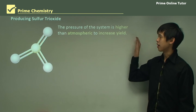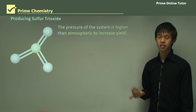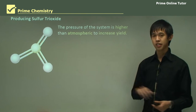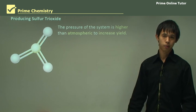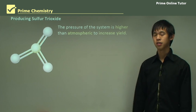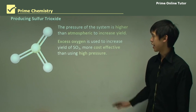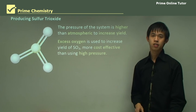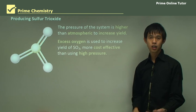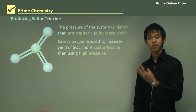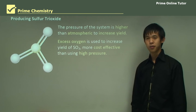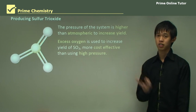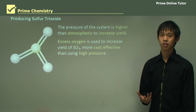The pressure of the system is also set higher than atmospheric to increase yield — same as the Haber process — so that we can increase the yield of sulfur trioxide, one of our main intermediates before we get to sulfuric acid. Another way of doing this is by adding excess oxygen, which can also increase yield. Because oxygen appears on the left-hand side, adding more than what's necessary always forces the reaction to the right, increasing the amount of SO3 produced.